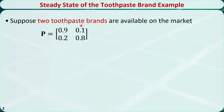We introduced the toothpaste brand example in a previous video. Suppose two toothpaste brands are available on the market. This is the original one-step transition probability matrix. When a person just purchased brand 1, there is a 90% chance they will purchase brand 1 next time, and a 10% chance they will purchase brand 2. When a person just purchased brand 2, there is an 80% chance they will purchase brand 2 next time, and a 20% chance they will purchase brand 1.